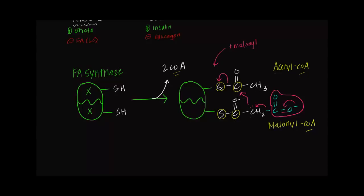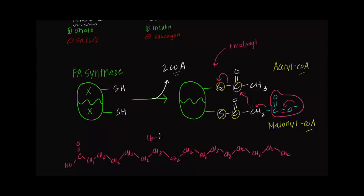The NADPH reduction of carbons bonded to oxygen and the loss of water are quite similar to the reverse of beta-oxidation. Ultimately, after carbon-carbon bond formation and reduction of those carbonyl carbons, we form the 16-carbon palmitic acid — a completely saturated fatty acid. The body can use it to make longer-chain fatty acids if needed, and ultimately these fatty acids attach to a glycerol backbone to form triacylglycerol, which the liver sends out via VLDL particles to deliver fats to the rest of the body's tissues.